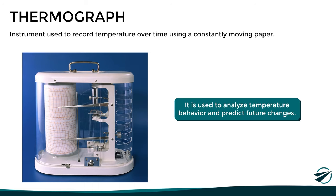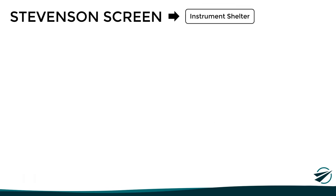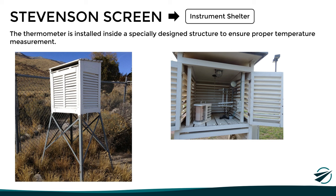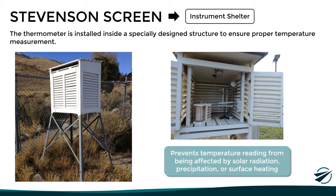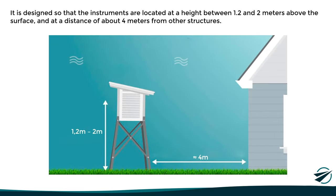The thermograph allows analysis of temperature behavior and therefore prediction of future changes in weather conditions. It is important that both the thermometer and the thermograph be located where they can give a correct reading of actual air temperature. For this reason, these instruments are installed inside a Stevenson screen, also known as an instrument shelter. This specially designed structure ensures proper air temperature measurement, preventing it from being affected by solar radiation, precipitation, or surface heating. To achieve the best accuracy, the instruments are located at a height between 1.2 and 2 meters above the surface, and at a distance of about 4 meters from other structures.